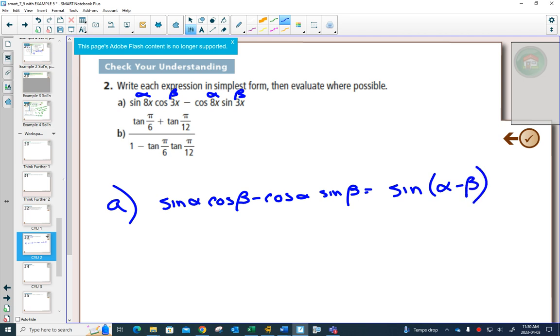So because of that, this one is going to equal sine, my alpha is 8x, my beta is 3x. So I can write it as 8x minus 3x. So this one would simplify to sine of 5x.